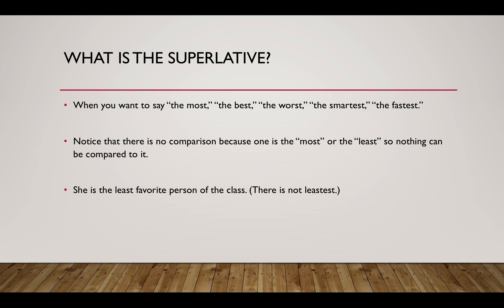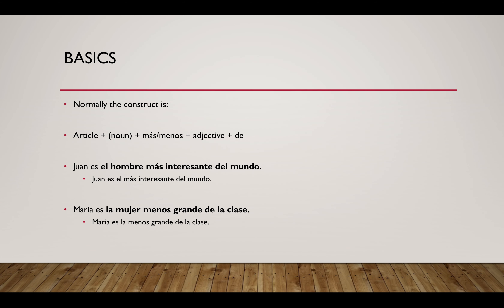Just a quick note: 'she is the least favorite person of the class' — you cannot have 'leastest,' and 'he's the best' — you cannot have 'bestest.' So these have two separate forms; there's always an irregular form floating around. The basic construct is usually an article (el, la, los, or las), then a noun, then más, then the adjective, and then de. The de is optional — if you already know what you're talking about, you don't have to use it. It can also be article + noun + menos + adjective + de, so anywhere from three to five components.